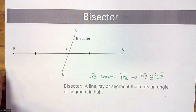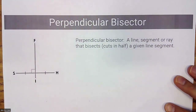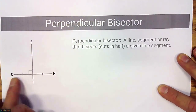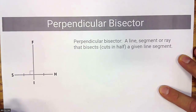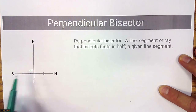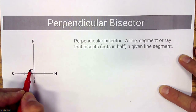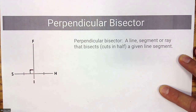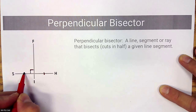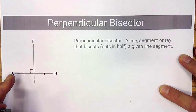Now we're going to put those two definitions together — perpendicular lines and bisector — and we get a perpendicular bisector. That means we have two lines, F-I and S-H, or two segments, that are perpendicular, meaning there is a 90-degree angle signified by that box, and bisector, meaning that wherever they intersect, that's the halfway point of segment S-H.